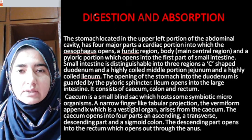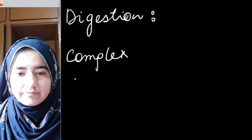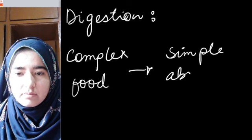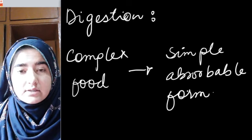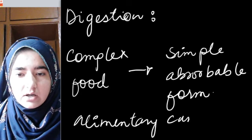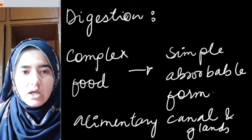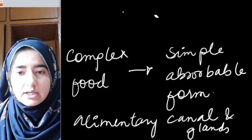Digestion simply means conversion of complex food into simple absorbable form. Our digestive system includes the alimentary canal along with glands, and it starts from the anterior portion — the mouth — up to the posterior portion, the anus.